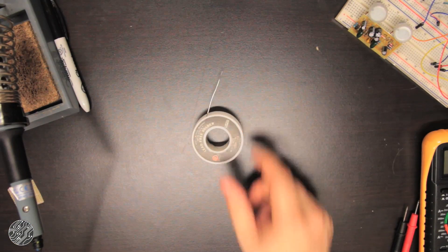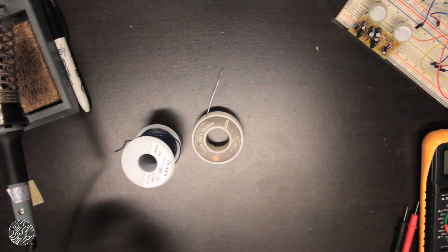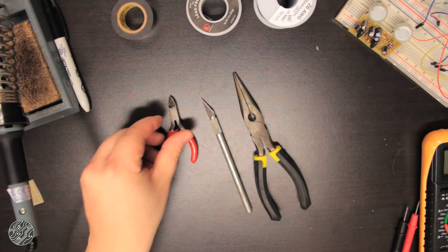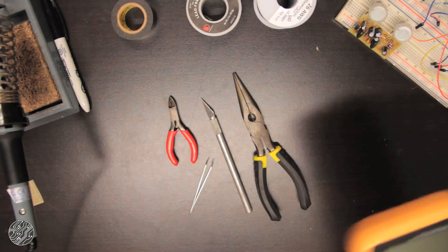Soldering iron with adjustable temp, solder, right hookup wire, electrical tape, needle nose pliers, exacto knife, small wire snips, tweezers, and a digital multimeter.